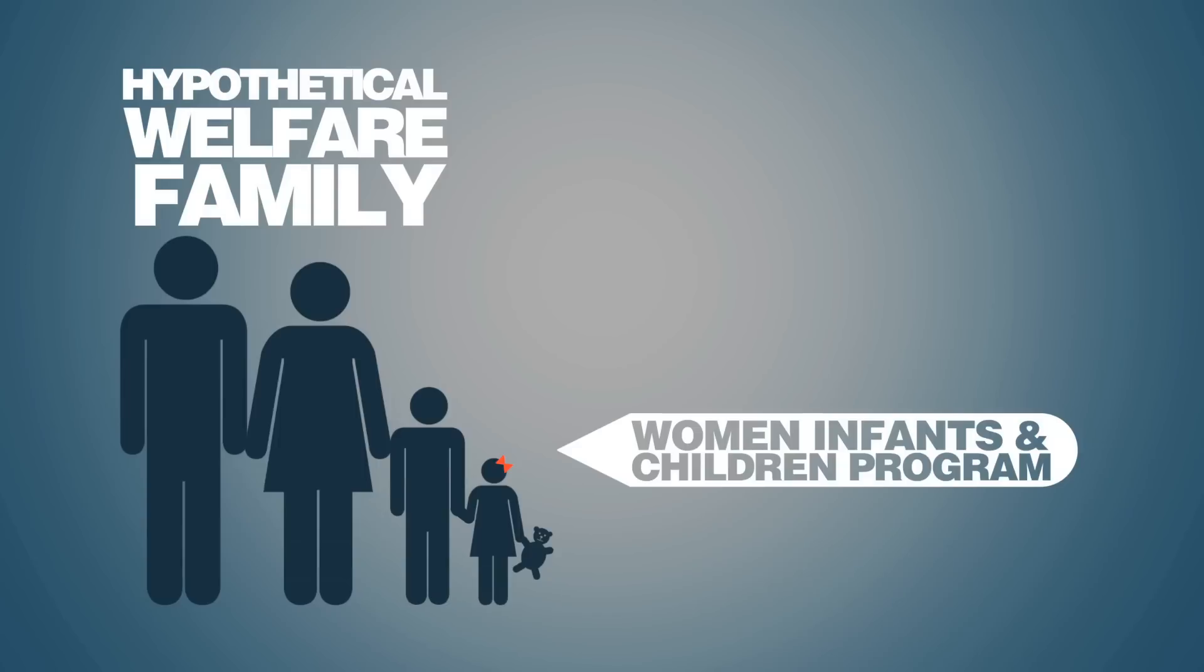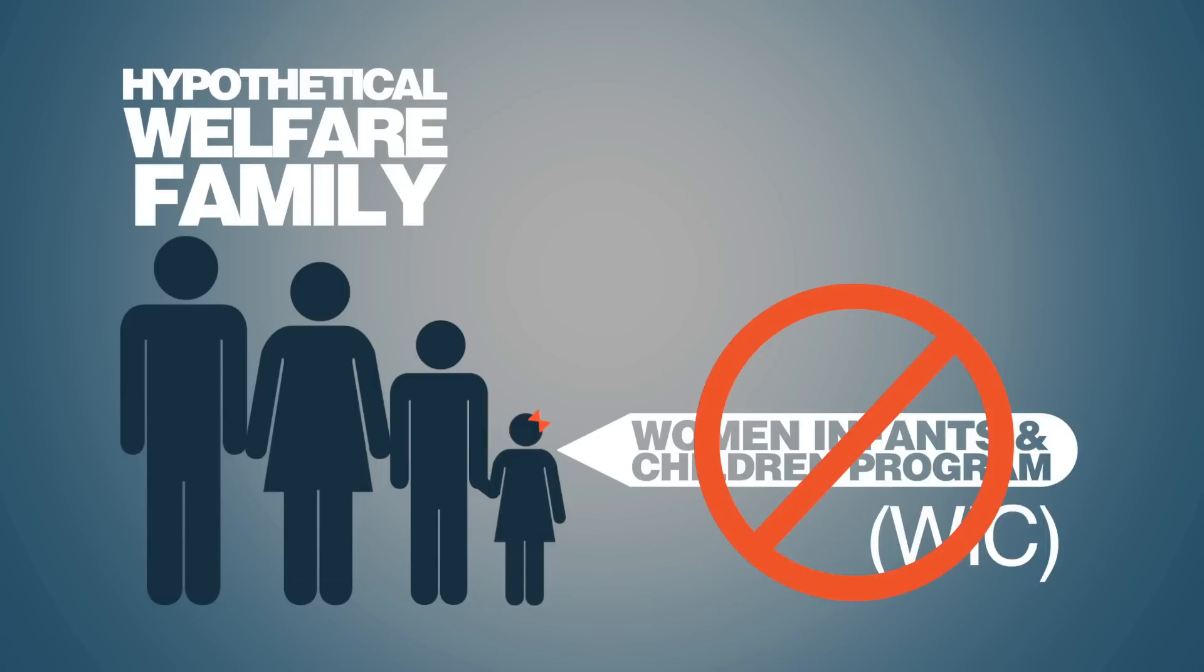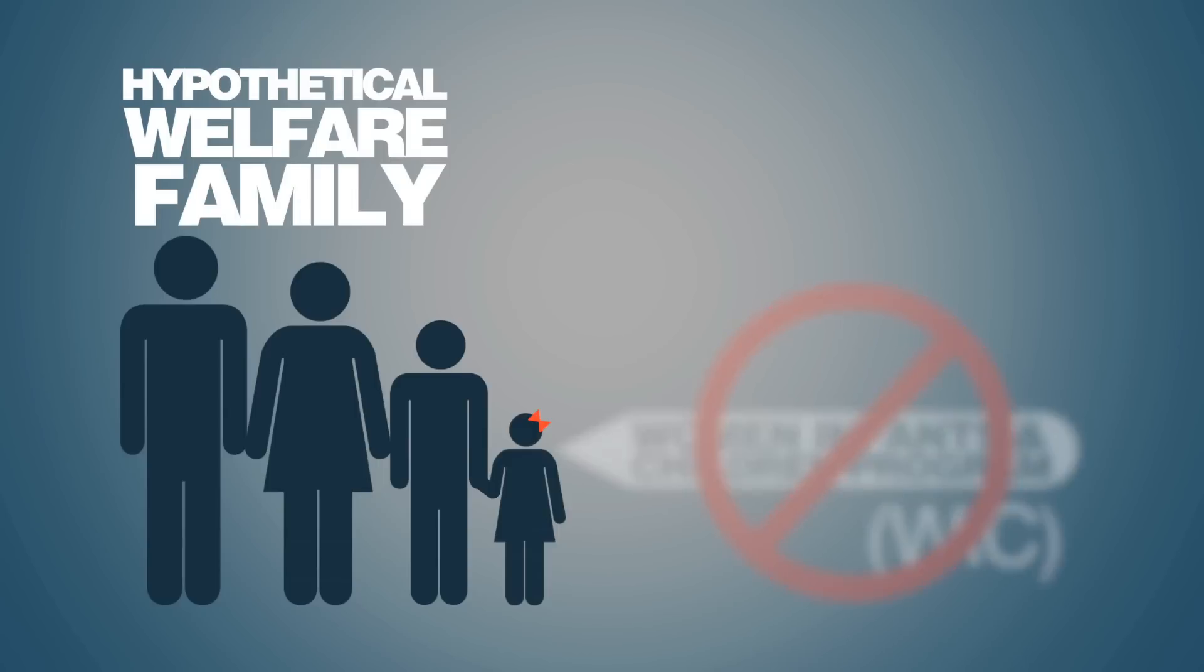Of course, not every welfare recipient gets all these benefits. But some get benefits from even more programs. With 72 programs involved, there is a buffet of options. For example, if our hypothetical family had children older than five, they wouldn't receive benefits from Women's Infants and Children Program, WIC. Instead, they would get free school breakfasts and lunches.